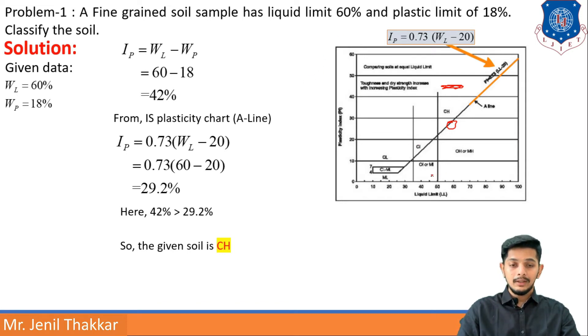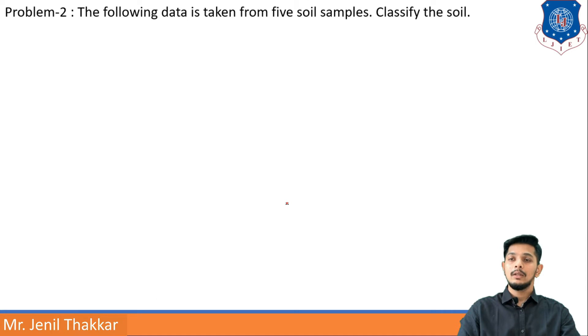For that WL should be checked. WL is greater than 60%, so if it is above 50 it will be 60% and it will be somewhere here. So if we get our point here it must be CH, and that is how we can write: given soil is CH—clay with high plasticity.